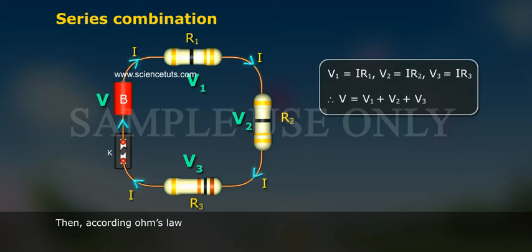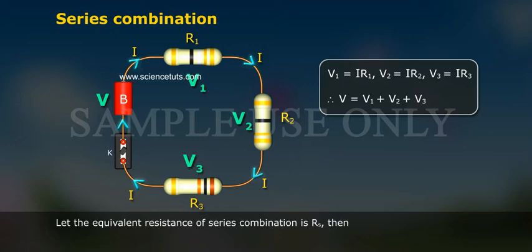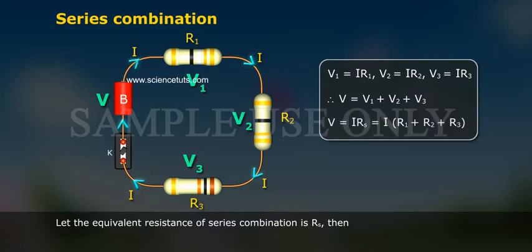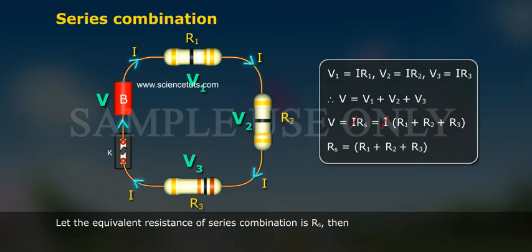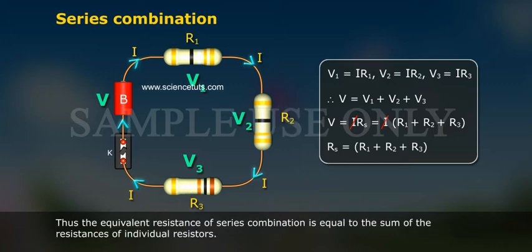Therefore, V = V1 + V2 + V3. Let the equivalent resistance of the series combination be RS. Then V = IRS = I(R1 + R2 + R3). Thus, the equivalent resistance of the series combination is equal to the sum of the resistances of the individual resistors.